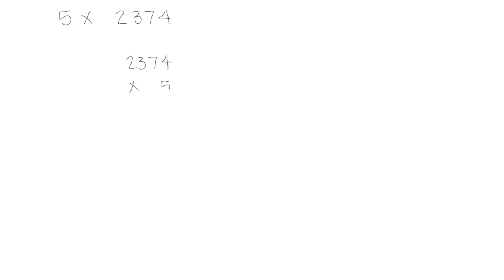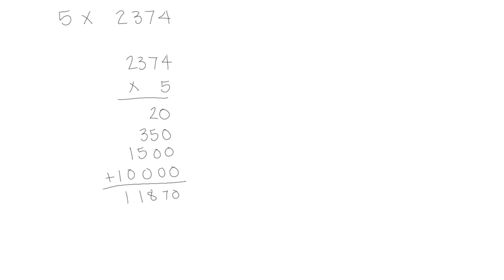Let's start with 5 times 2,374. Let's start by reviewing partial products. We'll write the problem vertically. Starting with the ones, four ones five times would be 20 ones. Then seven tens five times would be 350. Then three hundreds five times would be fifteen hundreds. And two thousands five times would be ten thousands. So those would be all of our partial products. We'd add them together and get a total product of 11,870.